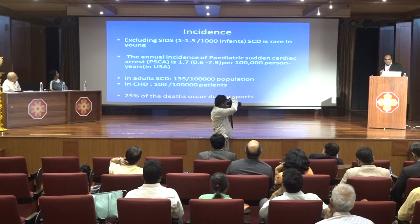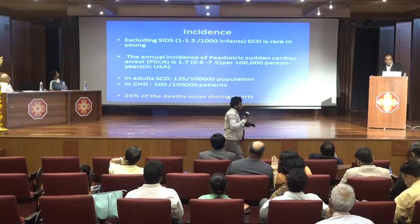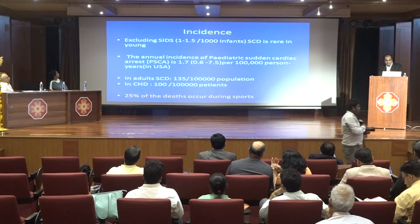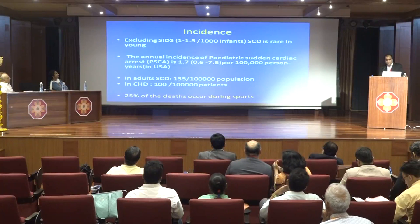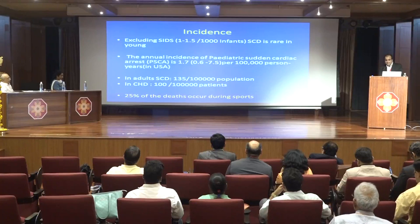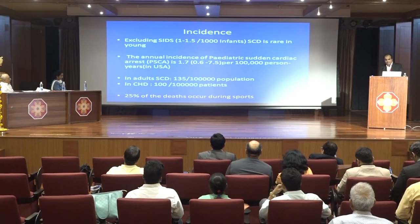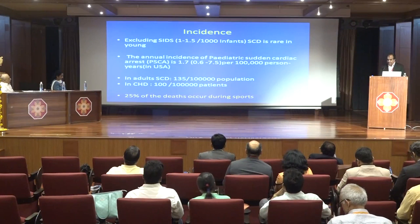In children, the most common cause is sudden infant death syndrome. Excluding this, which has an incidence of 1 to 1.5 per thousand infants, sudden cardiac death is rare in the young. The annual incidence of pediatric sudden cardiac death is 1.7 per lakh person-years, whereas in adults it is 135 per lakh population.